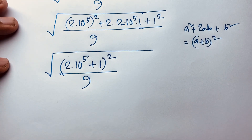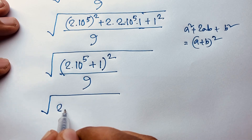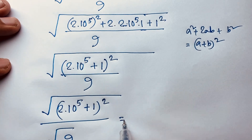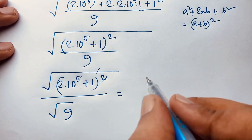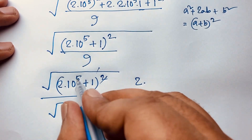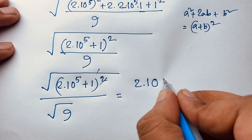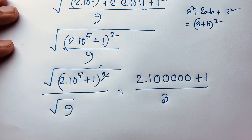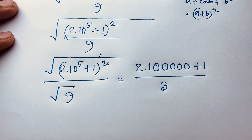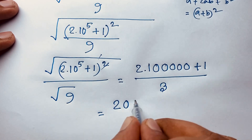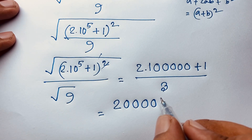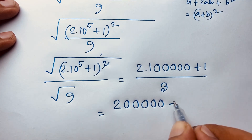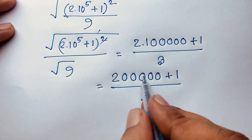So I can apply this formula here: a is 2 times 10 to the power 5, plus b is 1, whole to the power 2, over this 9. Now you can easily see here: square root of (2 times 10 to the power 5 plus 1) whole squared, over square root of 9. Now at this minute you can evaluate this expression: square root of 200001 plus 1, over 3.